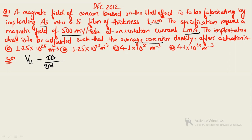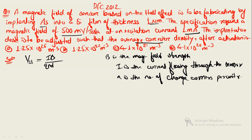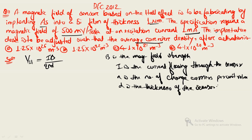To summarize the variables: B is the magnetic field strength, I is the current flowing through the sensor, n is the number of charge carriers per unit volume, and D is the thickness of the sensor.